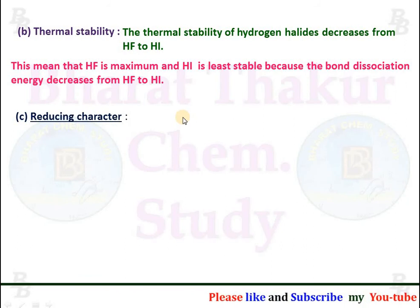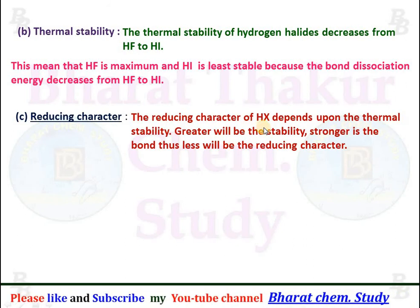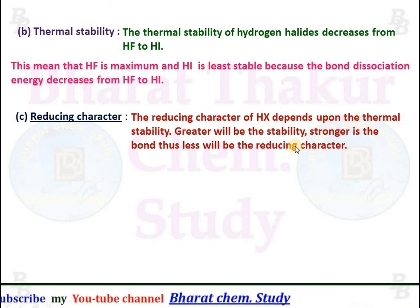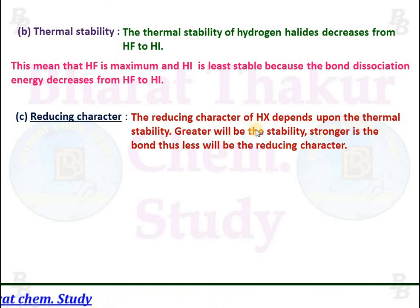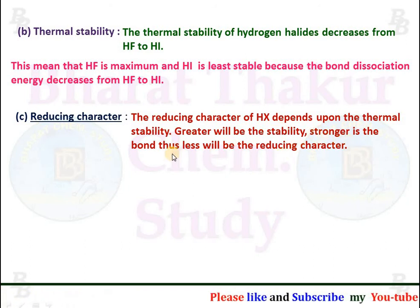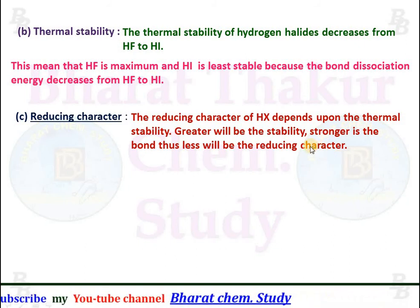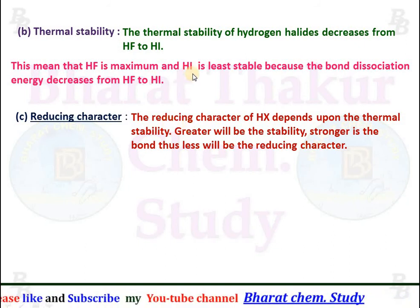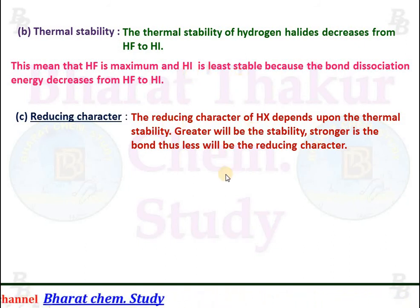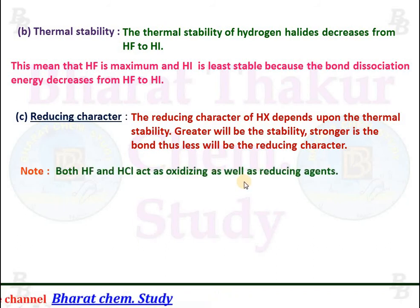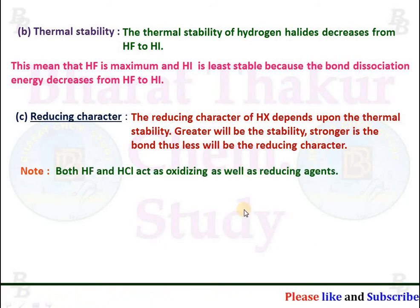Reducing character: the reducing character of HX depends upon thermal stability. Greater will be the thermal stability, stronger is the bond, and thus less will be the reducing character. Because HI is least stable, it acts as a powerful reducing agent. Note: both HF and HCl act as oxidizing as well as reducing agents.